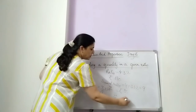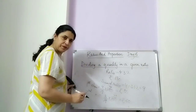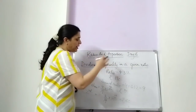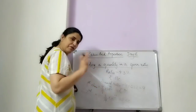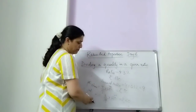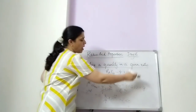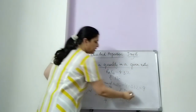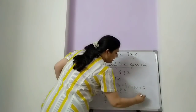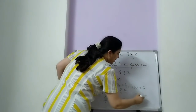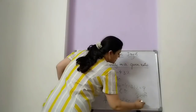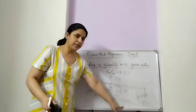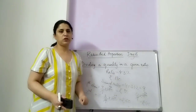That becomes 60 rupees. And the third share — either you can subtract from the total 180: subtract 80 plus 60, and that way you can get the third share. Or you just do the same thing for the third share: 2 out of 9 into 180. That gives you 40 rupees. So the first child gets rupees 80, the second gets rupees 60, and the third child gets rupees 40.